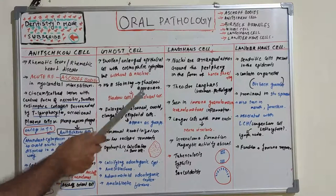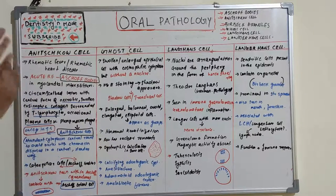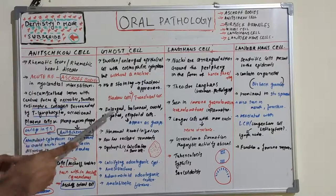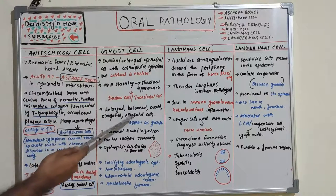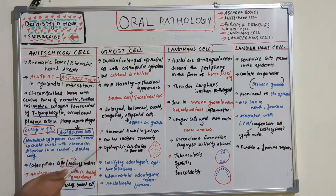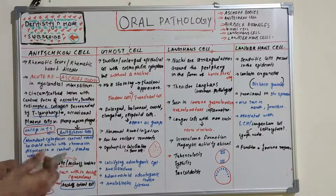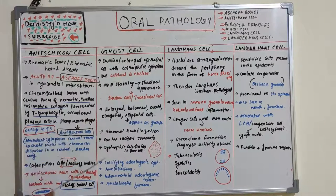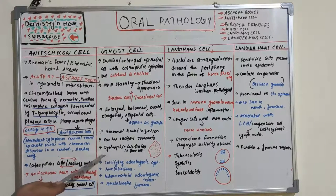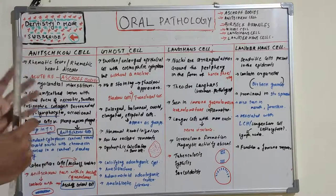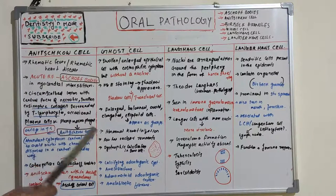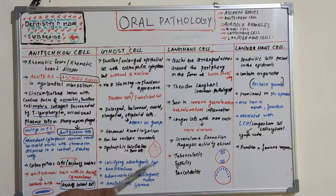The ghost cell looks like a ghost because it doesn't have a proper nucleus. It is an enlarged, balloon-like ovoid, elongated, or ellipsoid cell and appears in groups. It has abnormal keratinization, a few cells have little nuclear remnants, and some cells show dystrophic calcification. It is known as a shadow cell or translucent cell due to its shadow-like appearance.